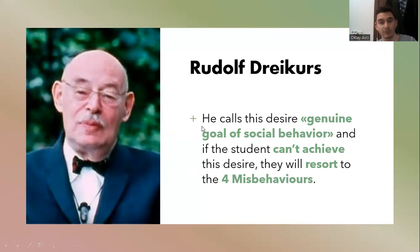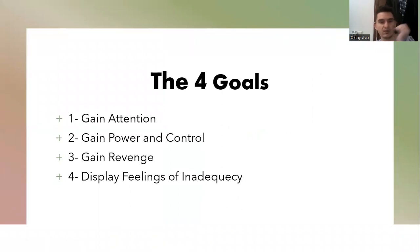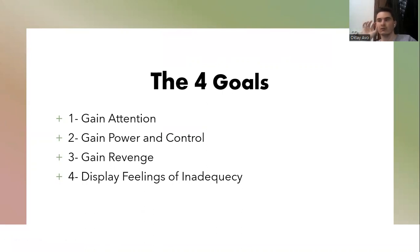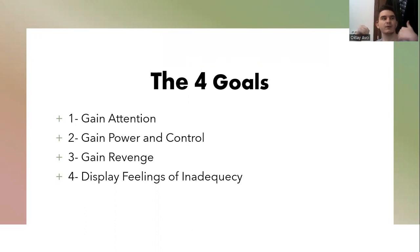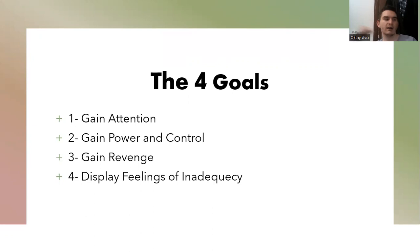So let's look at the four misbehaviours themselves. The four goals of misbehaviour are: first, gaining attention; second, gaining power and control; third, gaining revenge; and fourth, displaying feelings of inadequacy. If a student cannot become part of a group and can't feel they belong anywhere, they will resort to these goals — trying to gain the teacher's attention, then power and control in the classroom, then revenge against the teacher, and ultimately ending up displaying feelings of inadequacy.